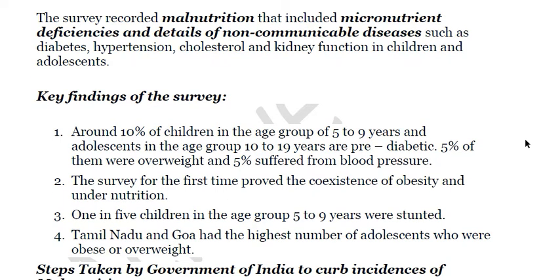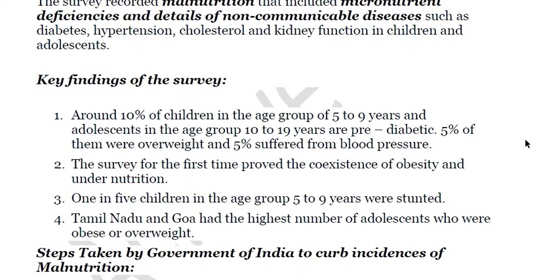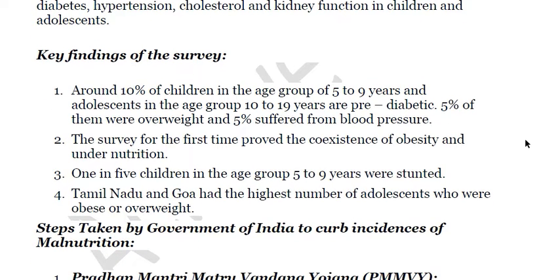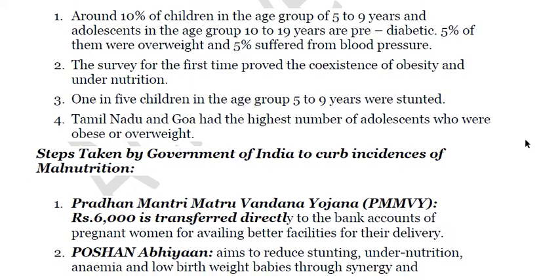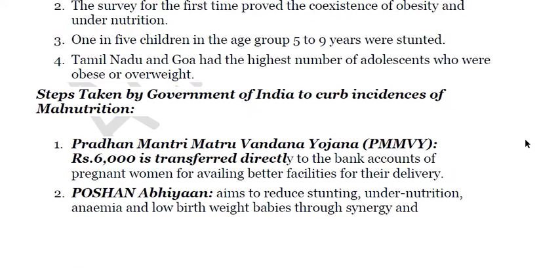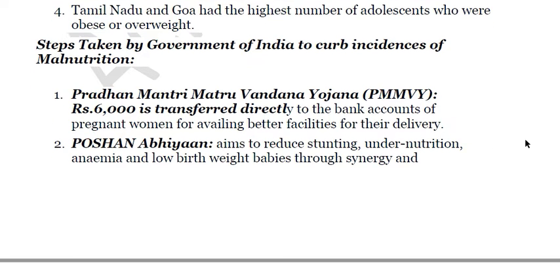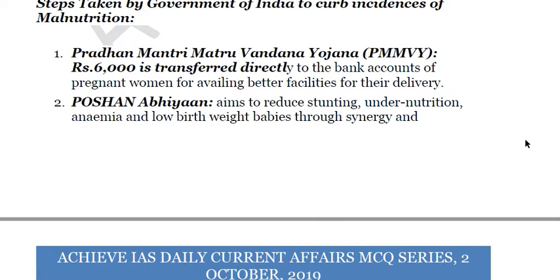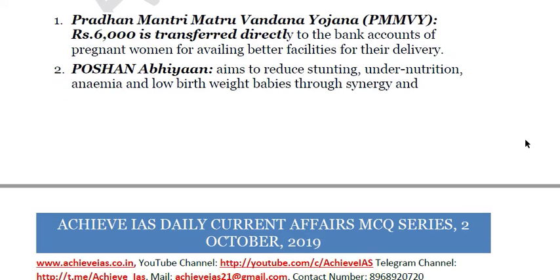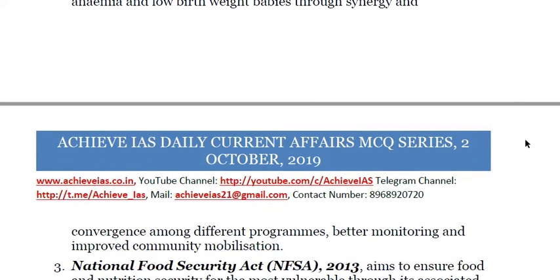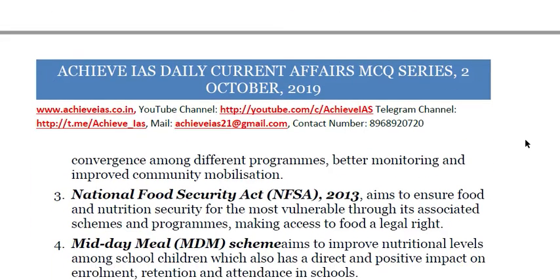The survey for the first time proved the coexistence of obesity and under-nutrition. One in five children in the age group of 5 to 9 years were stunted — that amounts to 20%, which is a concerning number. Tamil Nadu and Goa had the highest number of adolescents who were obese or overweight. Government steps include Pradhan Mantri Matru Vandana Yojana, under which ₹6,000 is transferred directly to the bank accounts of pregnant women for availing better delivery services.